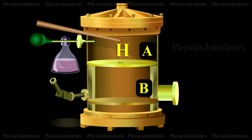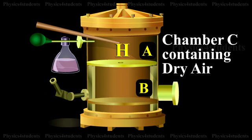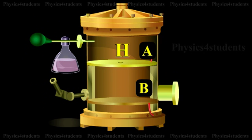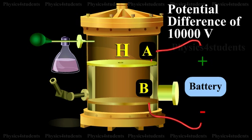The plates are surrounded by a constant temperature bath B and the chamber C containing dry air. The plates are connected to a battery which can provide a potential difference of the order of 10,000 volts.